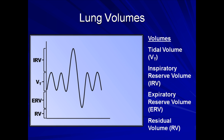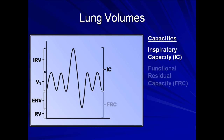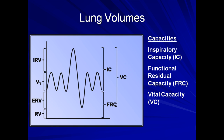In addition to the lung volumes, there are also quantities known as lung capacities. These are summations of two or more lung volumes. The sum of the inspiratory reserve volume and the tidal volume is known as the inspiratory capacity. The sum of the expiratory reserve volume and residual volume is the functional residual capacity. The functional residual capacity is a particularly important value because it represents the volume of the lung at equilibrium when the inward elastic recoil of the lung is perfectly balanced with the outward elastic recoil of the chest wall. The sum of the inspiratory reserve volume, tidal volume, and expiratory reserve volume is known as the vital capacity. And finally, the sum of all lung volumes is known as the total lung capacity.